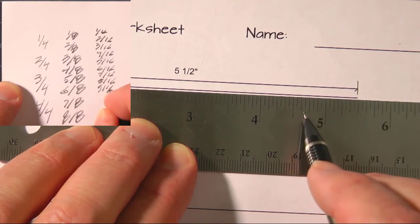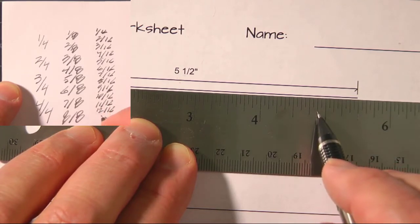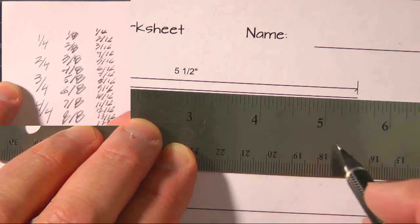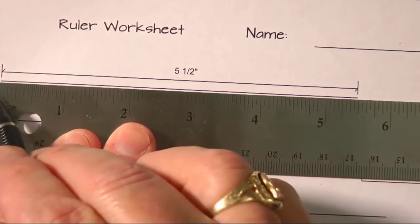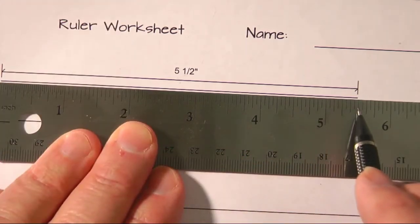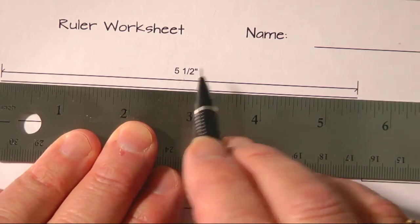Nine, ten, eleven, twelve, which is three quarters, thirteen, fourteen, fifteen, sixteen sixteenths, which is the full inch. So we've got from zero to five, and then a half inch, so that's why it says five and a half inches.